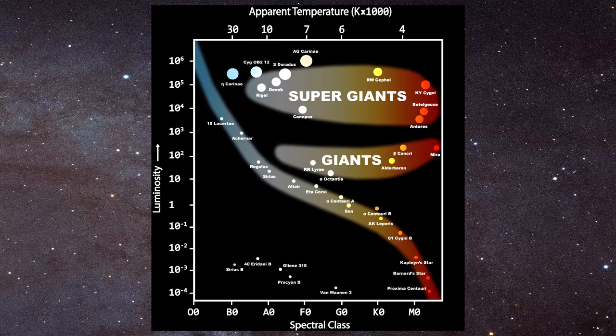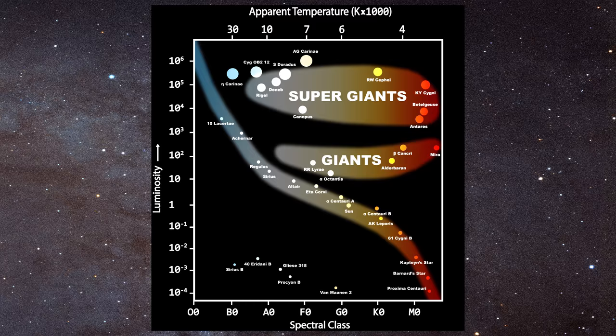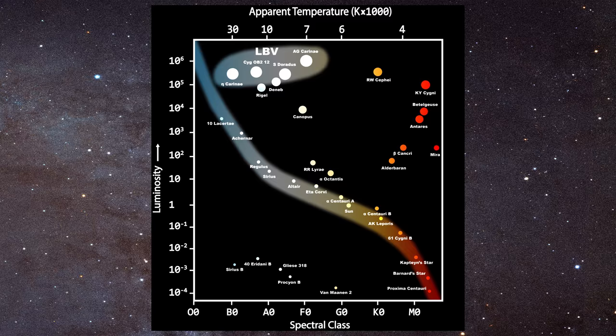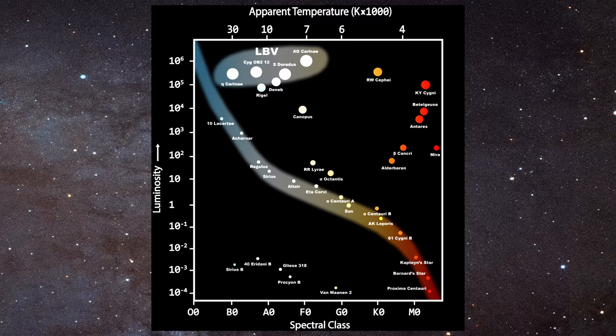Above the main sequence one finds the giants and supergiants, including such famous stars as Betelgeuse and Rigel. Next to these we find the absolutely fascinating luminous blue variables. These stars are violent objects known to undergo dramatic changes in luminosity and capable of ejecting material from their interior.